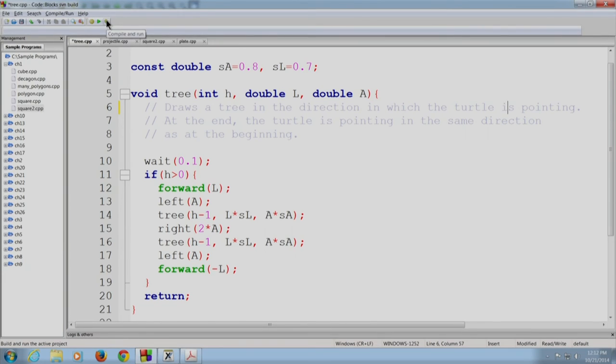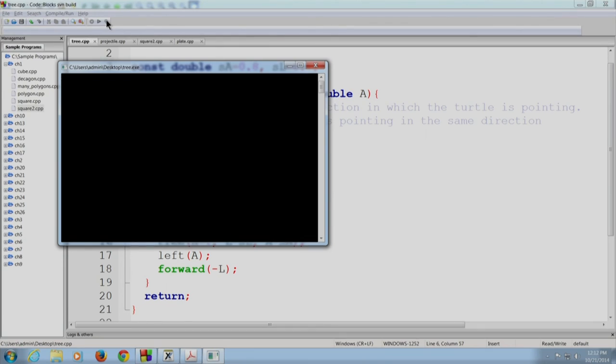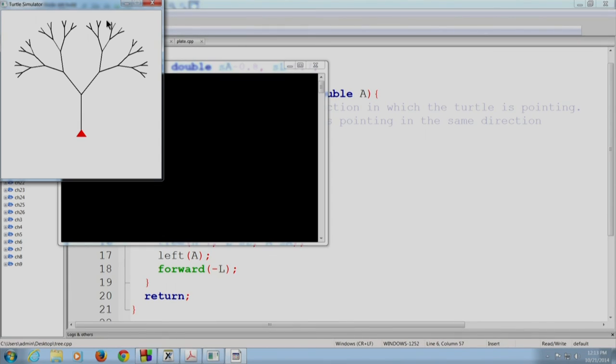So let me compile and execute this for you. As you can see, the turtle is drawing the left side first, because the left recursive call has been made first. As you can see, the invariant was satisfied. The turtle came back to the root, and it also was pointing in the vertical direction.